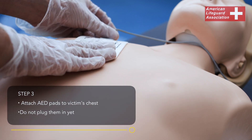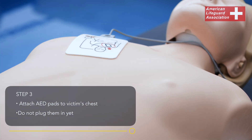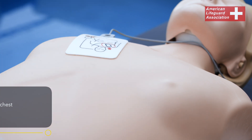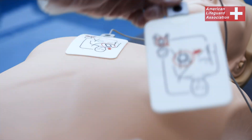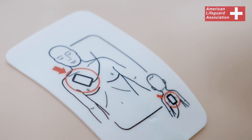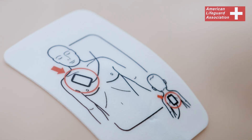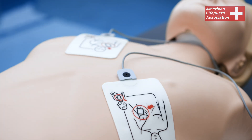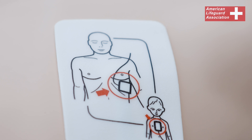Attach the AED pads to the victim's chest without plugging them in yet. For adults and children, place the first pad on the upper right side, and the second pad on the lower left side of the chest.